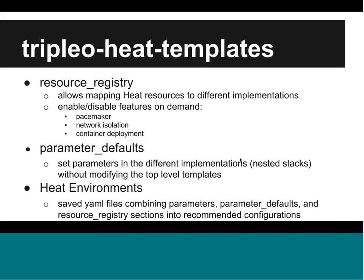Diving into a little more detail about changes in Triple O Heat templates: we're making heavy use of the resource registry, which allows us to map Heat resources to different back-end implementations. This allows us to enable and disable different features on demand. We were able to work on the new Puppet-based back-end in parallel to our existing templates while keeping the top-level template interface the same. We're using this same feature to enable and disable features such as Pacemaker, network isolation, and deploying in containers.